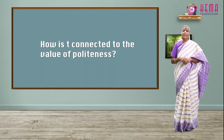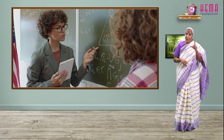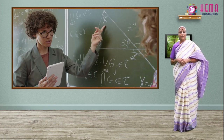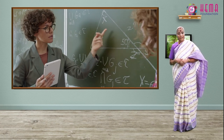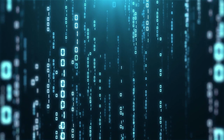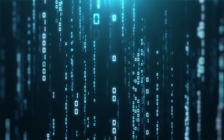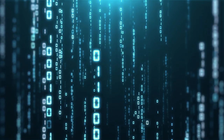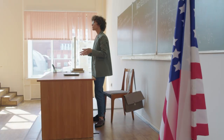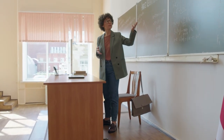How is this connected to the value of politeness? For any two elements to coexist, the first requirement is politeness — that is, to accept the other. Binary operations require a minimum of two numbers for a result to come. These two numbers have to cooperate and allow the operation to take place.